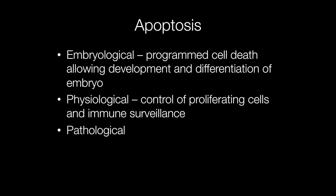Apoptosis plays a key role in embryological development, where programmed cell death allows the development and differentiation of the embryo. Later on, apoptosis is essential in physiological control of proliferating cells and immune surveillance. Apoptosis also plays a role in damaged or diseased tissues.